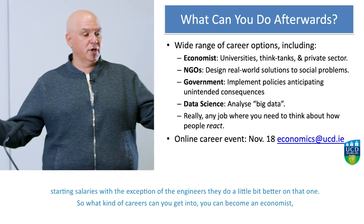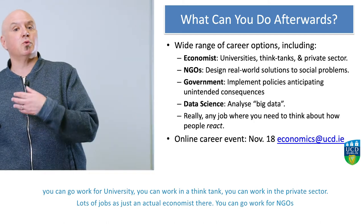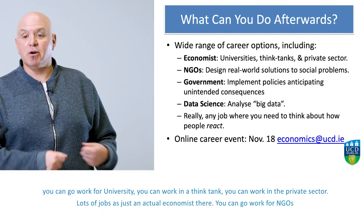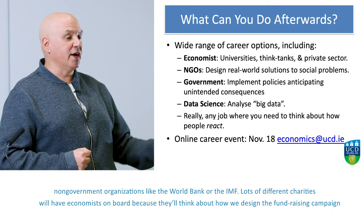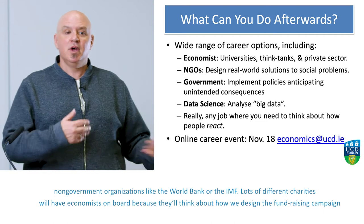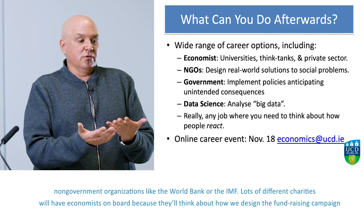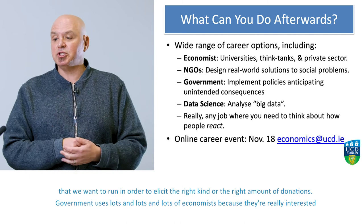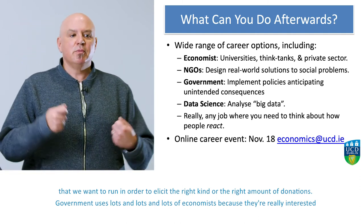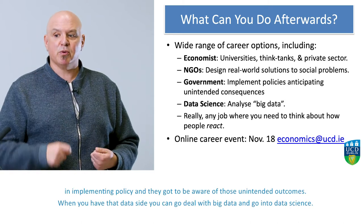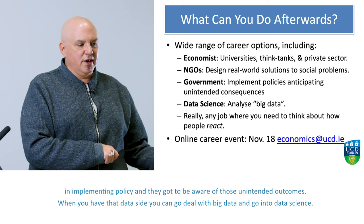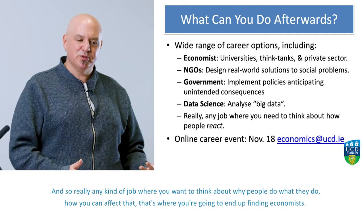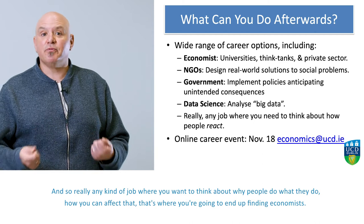What kind of careers can you get into? You can become an economist — working for a university, a think tank, or the private sector. You can work for NGOs like the World Bank or the IMF. Lots of different charities will have economists on board to think about how to design fundraising campaigns to elicit the right kind and amount of donations. Government uses lots of economists because they're interested in implementing policy and need to be aware of unintended outcomes. With the data side, you can go into big data and data science.